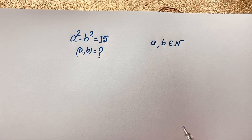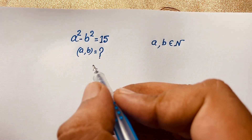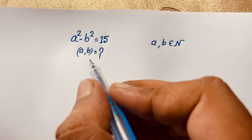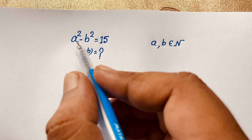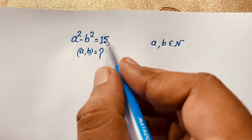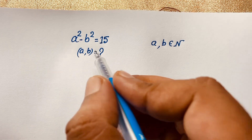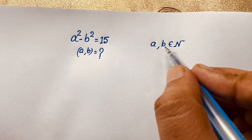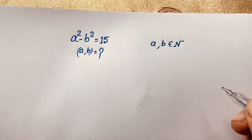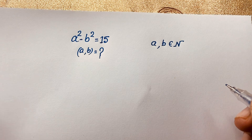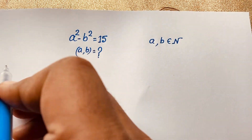Hello everyone, welcome to Russell's Classroom. Today we'll solve a nice math olympiad question. The question is: a² - b² = 15, where a and b are natural numbers. How do we solve this interesting math olympiad question?